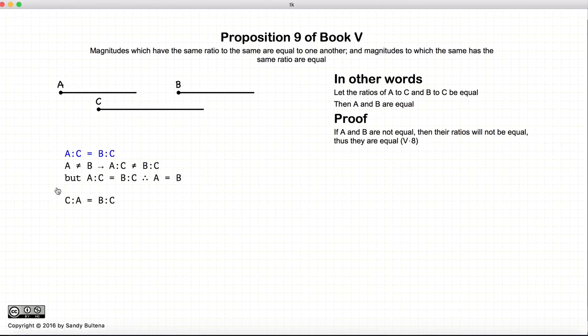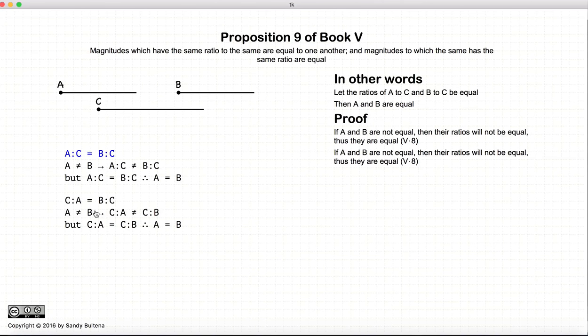Similarly, if we have c to a is equal to c to b, then if a is not equal to b, according to Proposition 8, these two ratios are not equal. But again, we're starting with the assumption that they are, so this cannot be true. And the inverse of this is that a is equal to b.